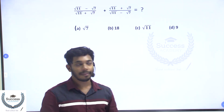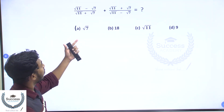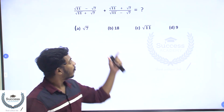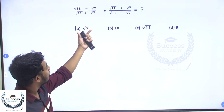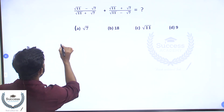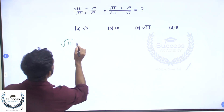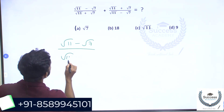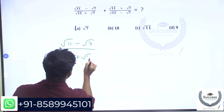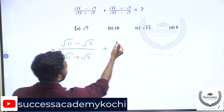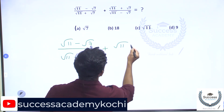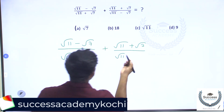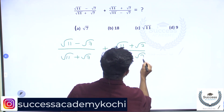The first question is: root 11 minus root 7 divided by root 11 plus root 7, plus root 11 plus root 7 divided by root 11 minus root 7.